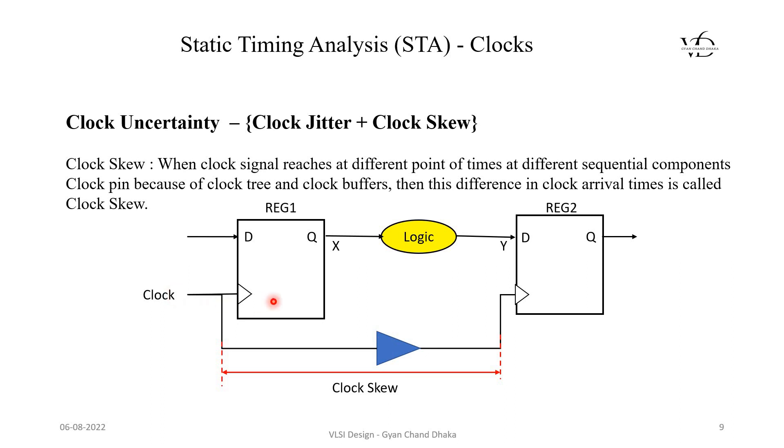Now suppose the rising edge for this flip flop is happening at time stamp 0. So this flip flop will get a rising edge clock at time stamp 0. But now this flip flop will get that rising edge at time 0 plus some delta.